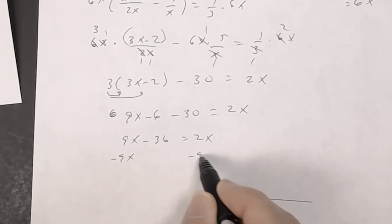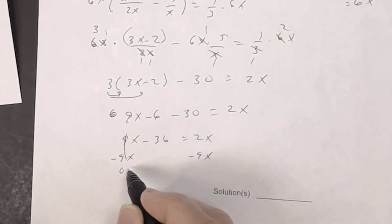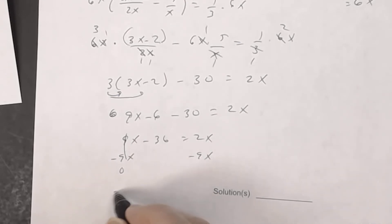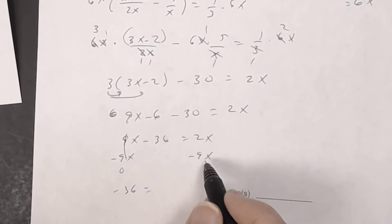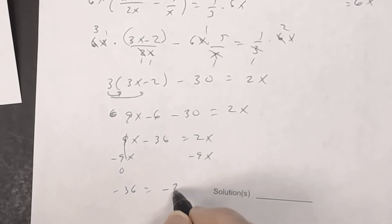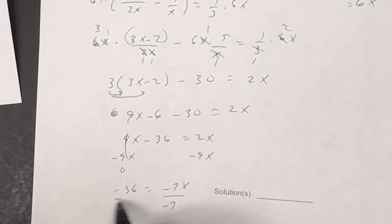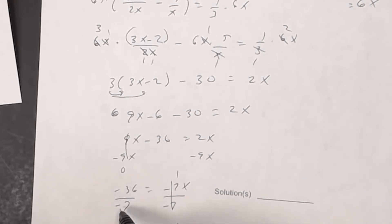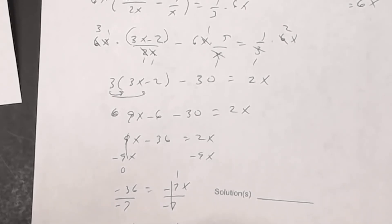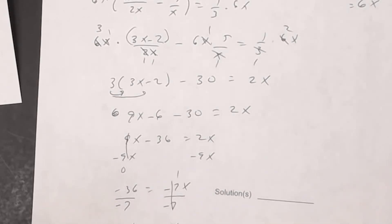Subtract 9x from both sides: negative 36 equals 2x minus 9x, which is negative 7x. Divide both sides by negative 7. A negative divided by a negative is positive, so x equals 36 over 7.